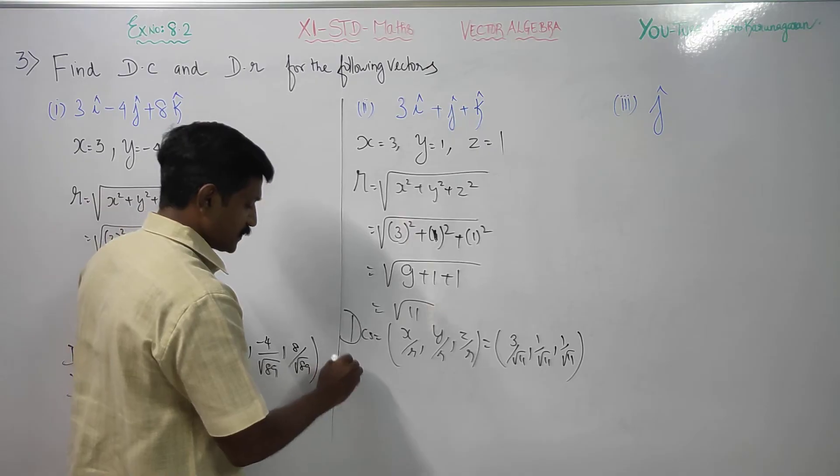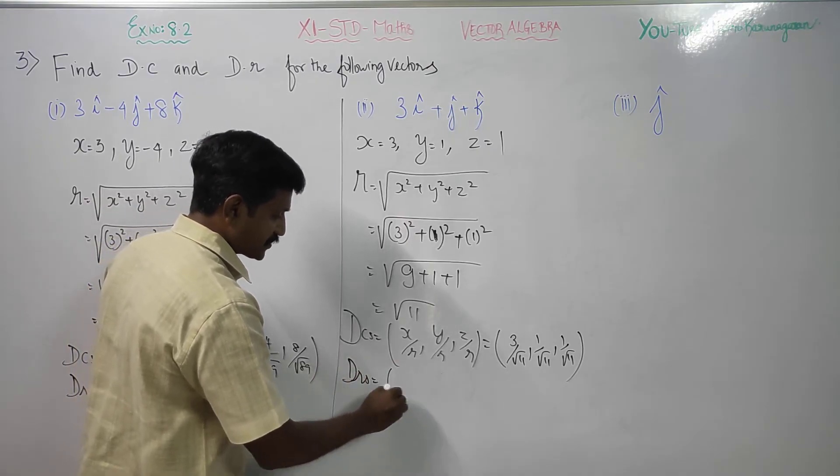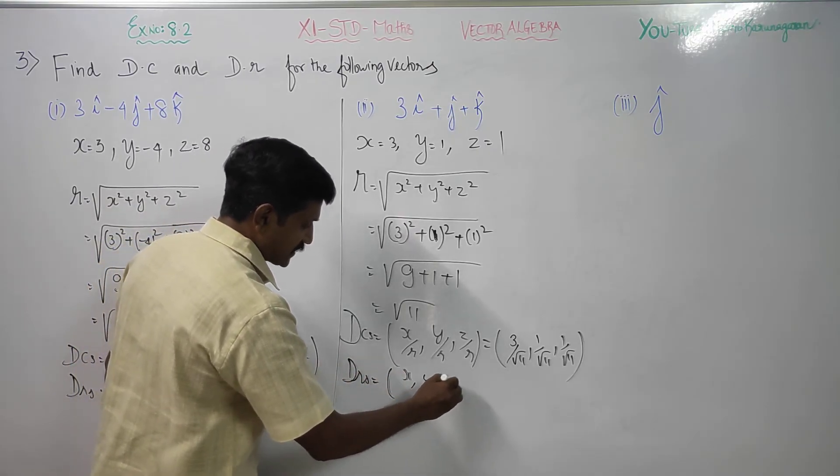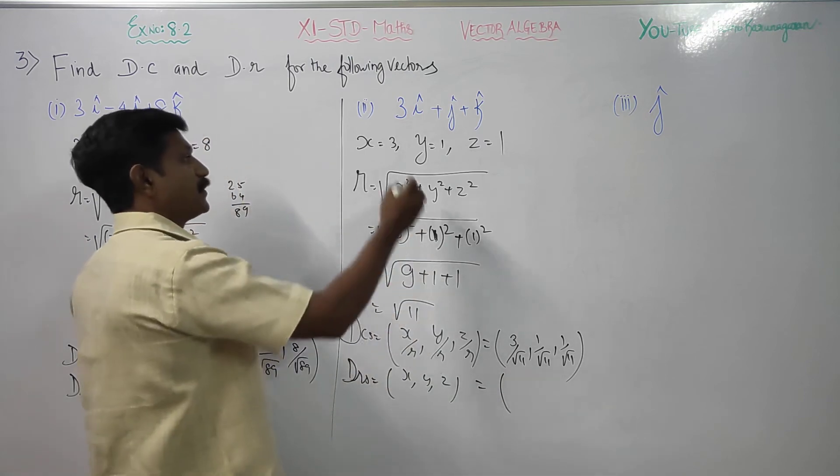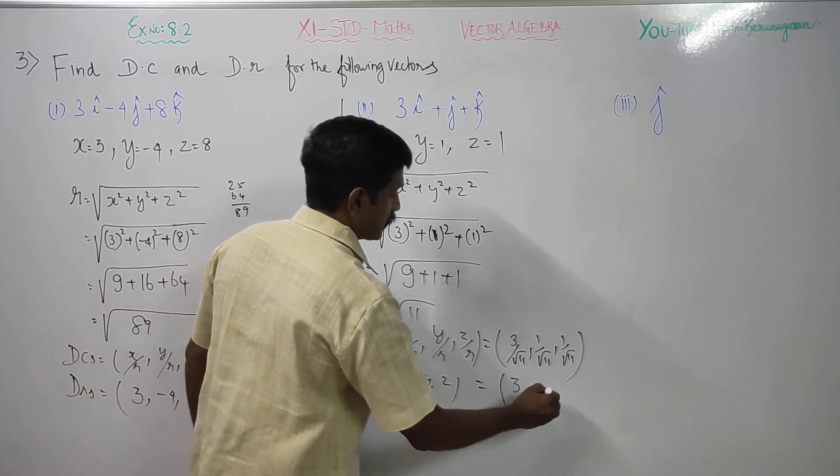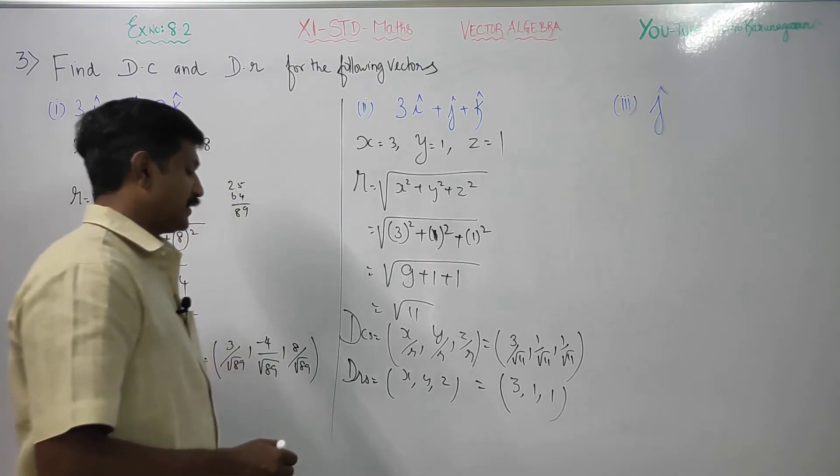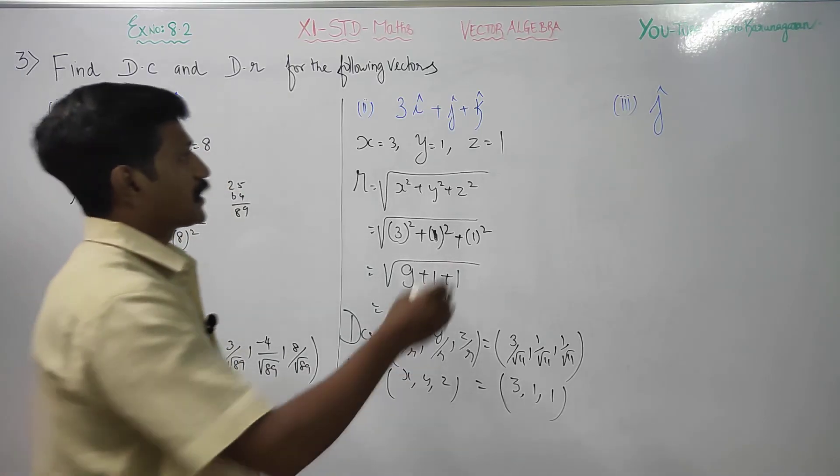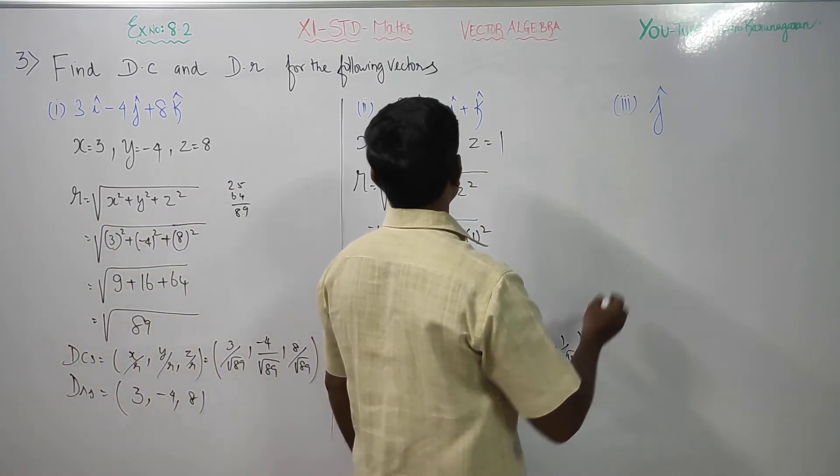What is my direction ratios? Direction ratios are x, y, z. What is my x, y, z? 3, 1, 1 is my direction ratios. Coming to third subdivision,